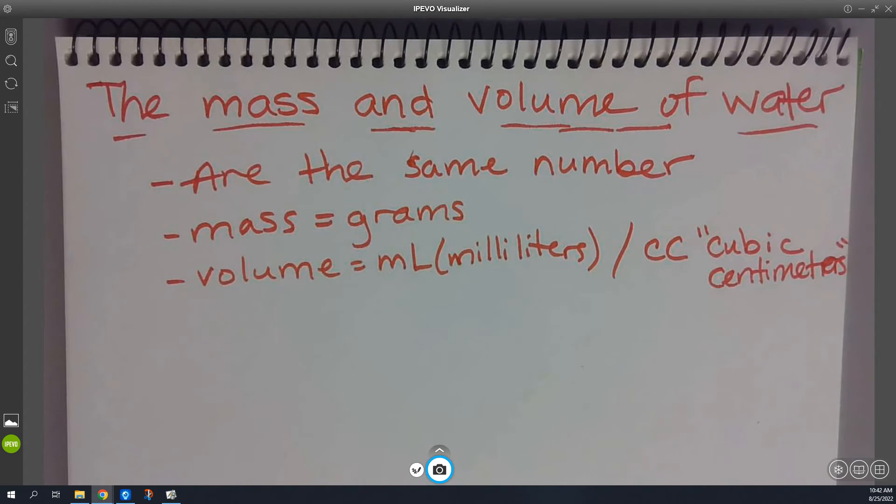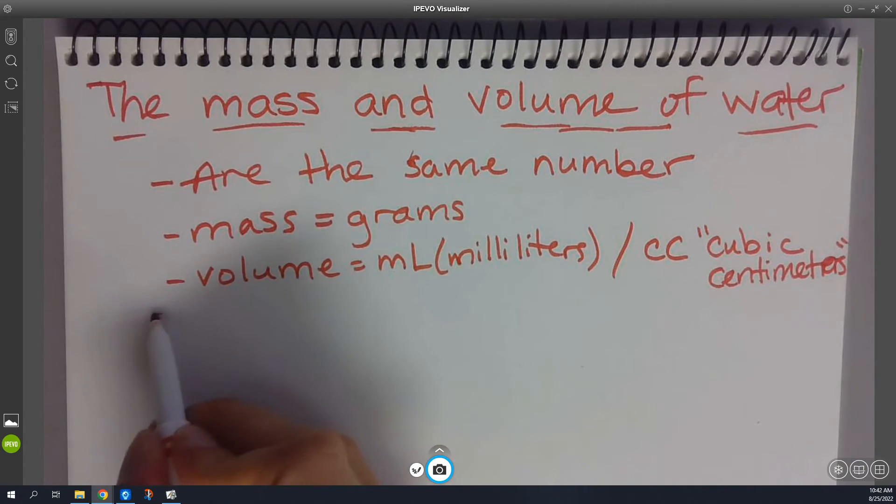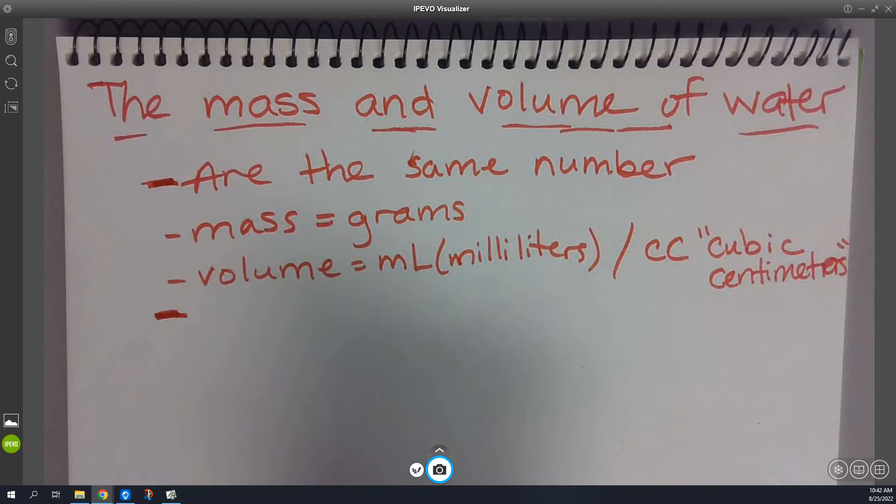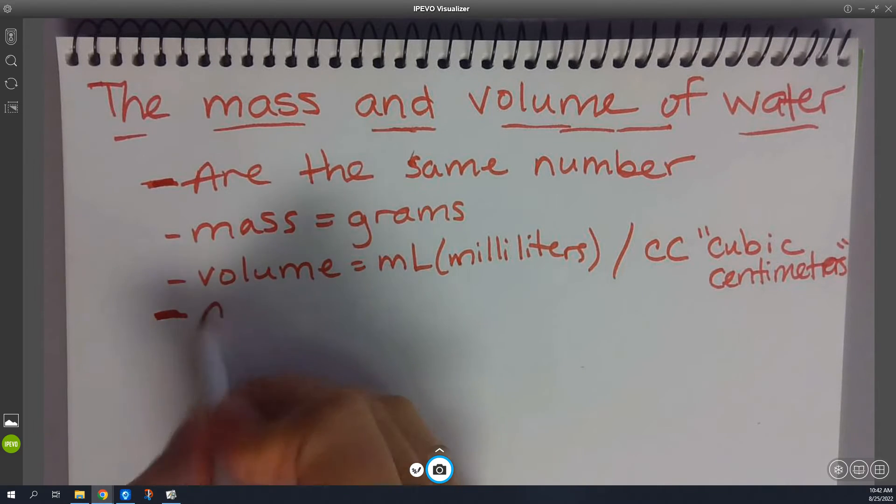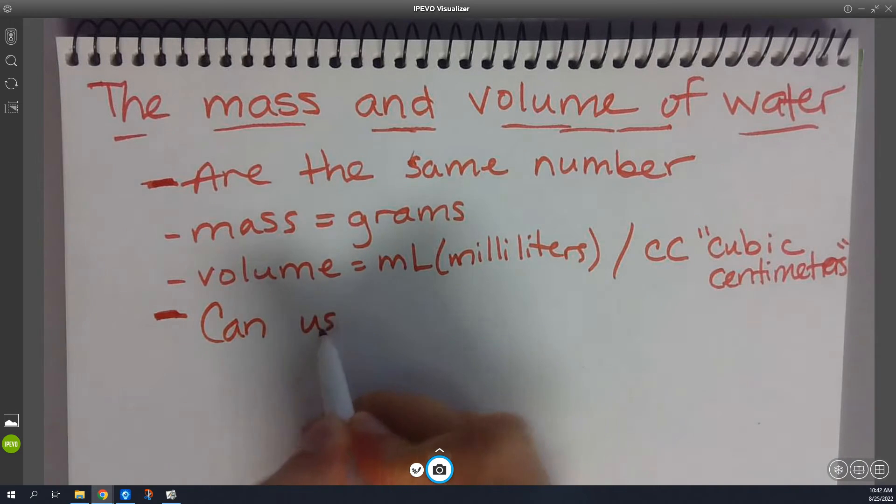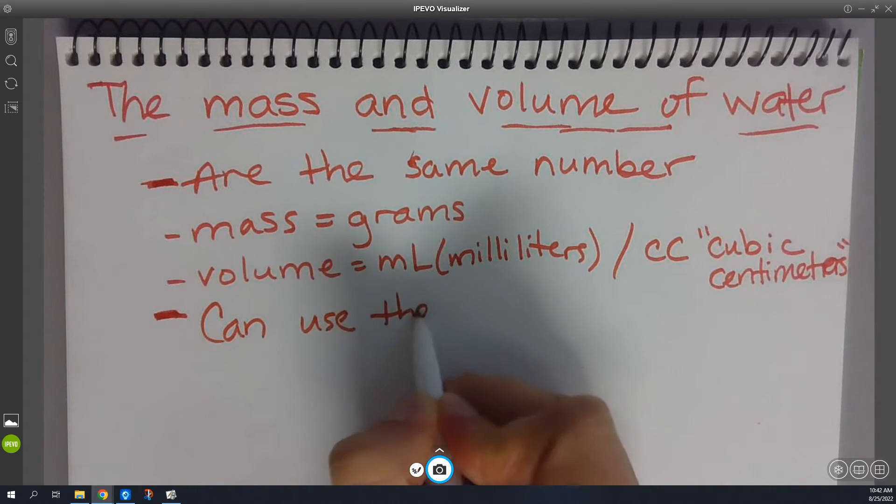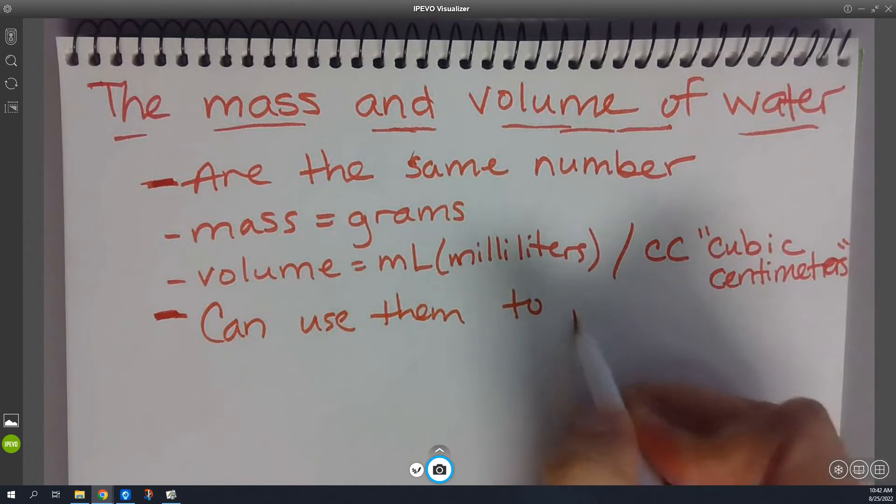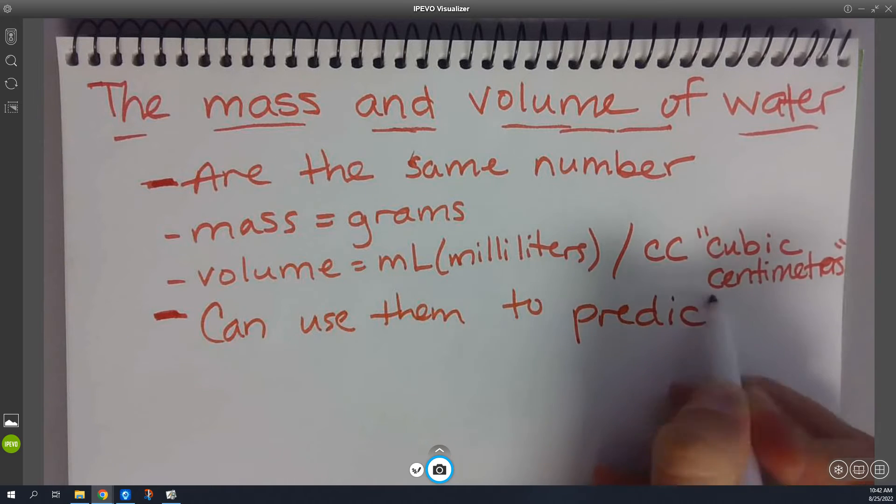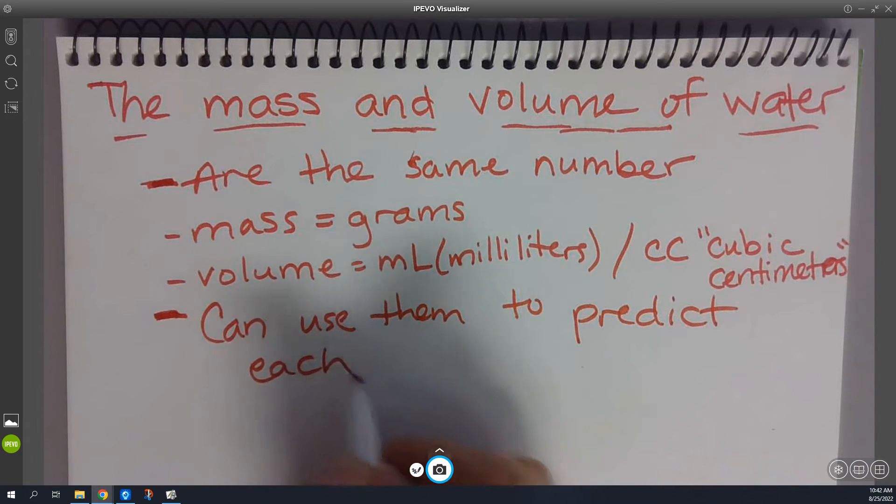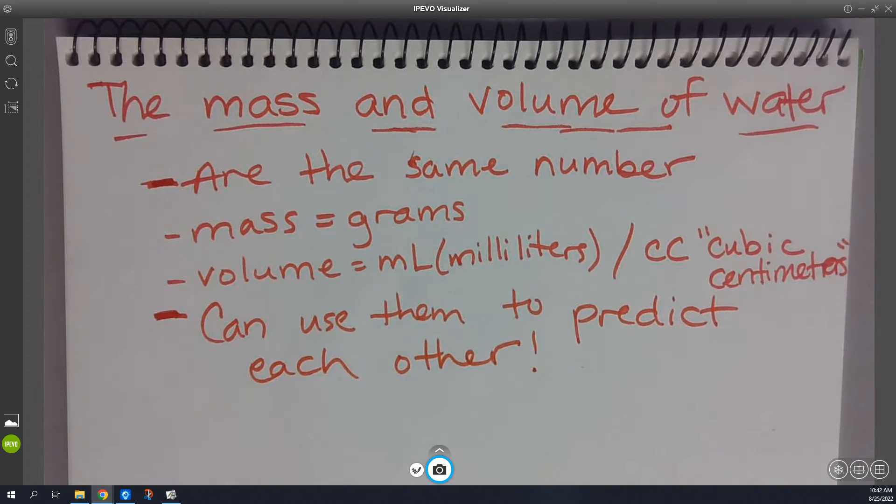So, the mass and the volume of water are the same number. And so, what we can say about that is that, I should make this bigger. Okay? Is that since they're the same number, we can use them to predict each other.